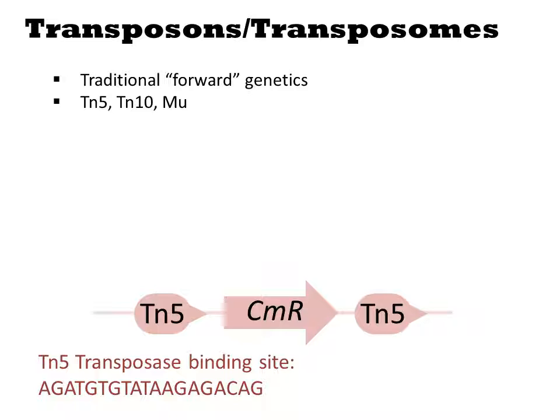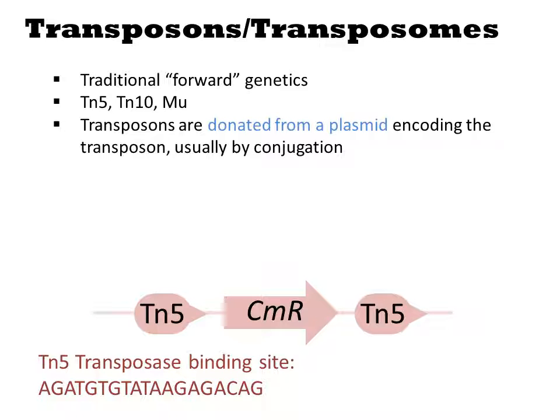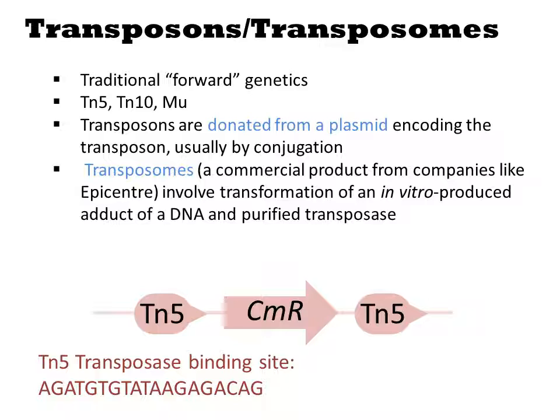Transposons are the workhorse of traditional forward genetics. They involve the random insertion of a DNA into the genome. There are three commonly used systems — TN5, TN10, and Mu — and each is defined by a transposase protein and a short sequence that is in cis to and flanking the sequence to be transposed. These short sequences are often called terminal repeats, but in some contexts have a different name. Transposons are usually encoded as plasmid DNAs or PCR products and are introduced into the cell by conjugation or transformation. In all cases, a protein-DNA complex is generated by reaction of the DNA with the transposase. This complex is called a transposome.